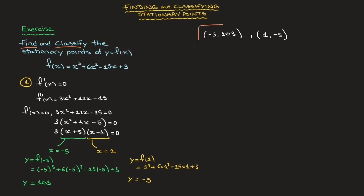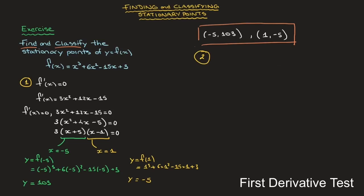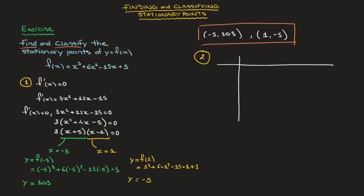The second thing we need to do is classify these two stationary points. For that, I'm going to study the sign of the first derivative f'(x) on either side of each stationary point. This approach is often called the first derivative test. I start by making a table, and I use the very top row to show the domain over which f(x) is defined, as well as highlight any values of x at which f'(x) equals 0.